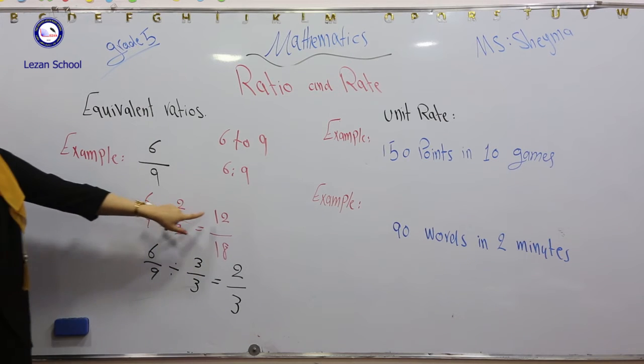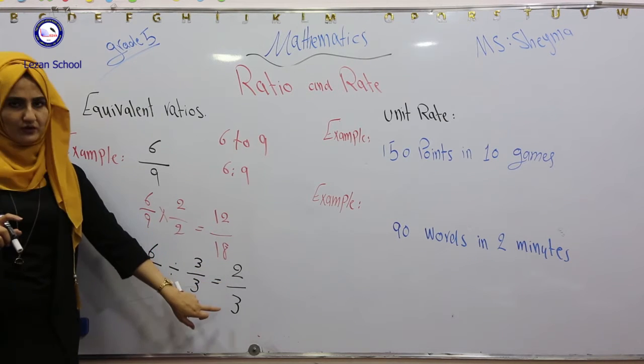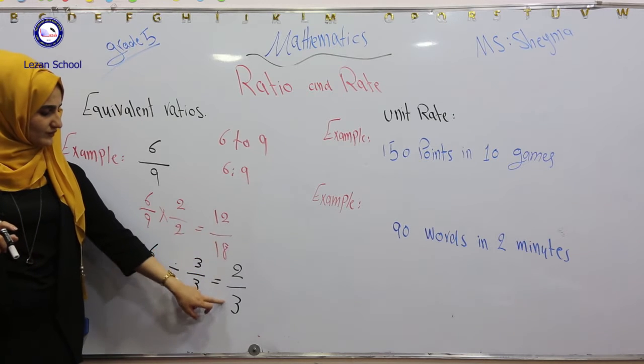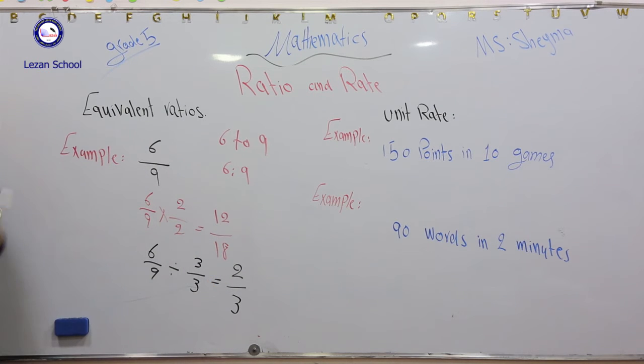So in here, we have two equivalent ratios: 12 over 18 and 2 over 3. They are both equivalent ratios for 6 over 9.